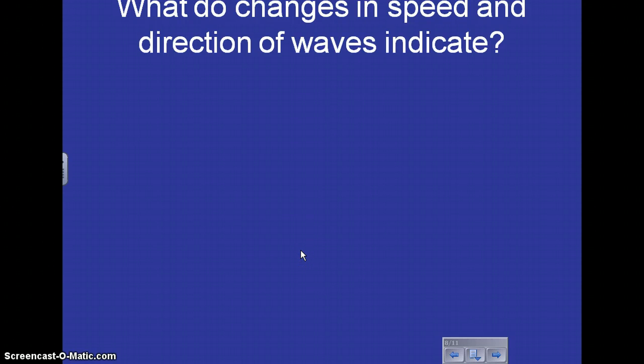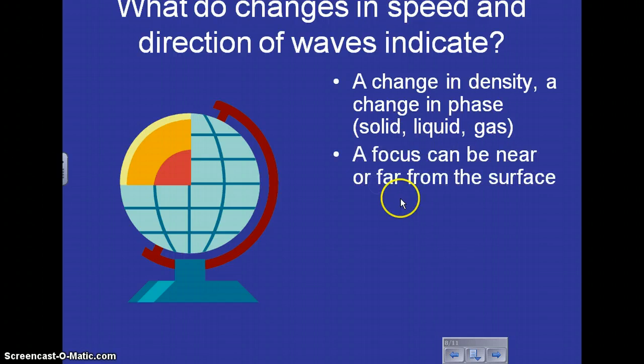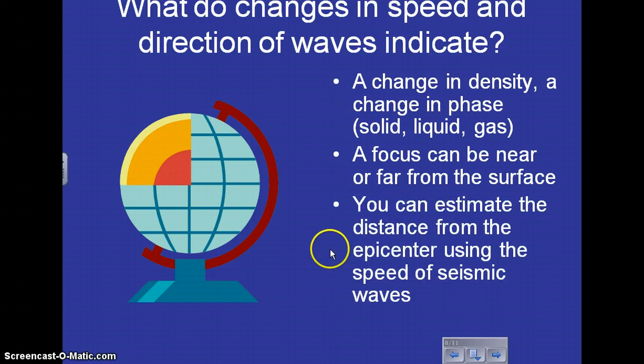What do the changes in speed and direction of the waves indicate? Well, if you measure earthquake waves and look at those recorded measurements, sometimes you can tell the change in the density or the thickness of the layers of the earth. So you could tell whether a layer of the earth was solid, liquid, or gas. A focus can be near or far from the surface, so it's important to look at the waves and what they are showing you. You can also estimate the distance from the epicenter by using the speeds of seismic waves, and that can determine where the earthquake started.